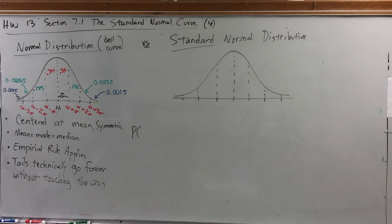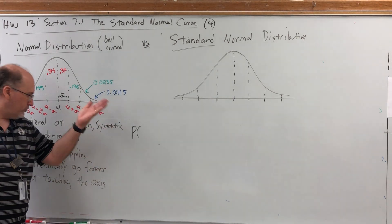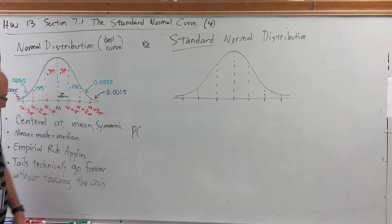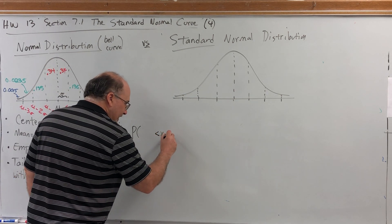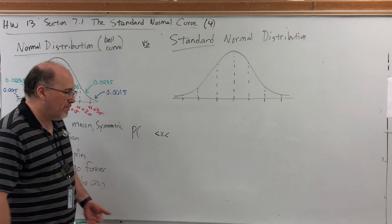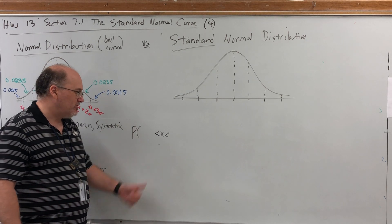I'm just going to resume the next video where I left off. So the empirical rule, in terms of probability, says the probability that x is between—and that's symbolically how you say x is between something. You say it's greater than the smaller number but less than the greater number.